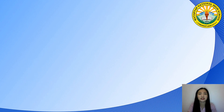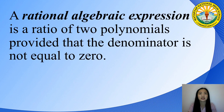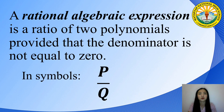Let's talk about Rational Algebraic Expressions. A Rational Algebraic Expression is a ratio of two polynomials provided that the denominator is not equal to 0. In symbols, P over Q, where P and Q are polynomials and Q is not equal to 0. Take note: the denominator should not be equal to 0 because any algebraic expression divided by 0 is undefined.